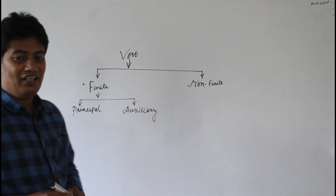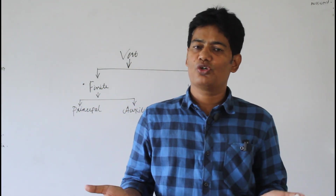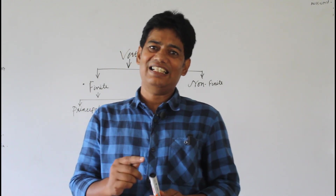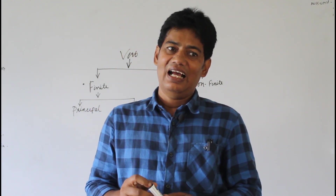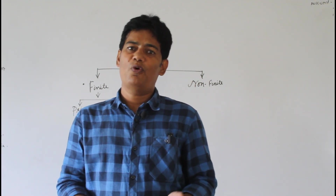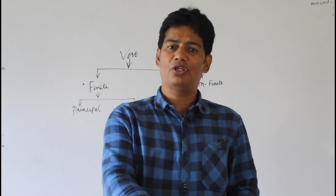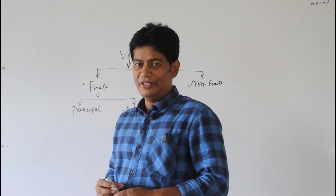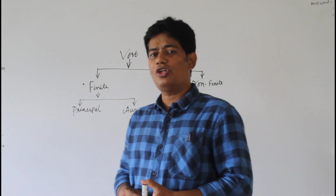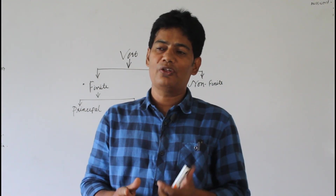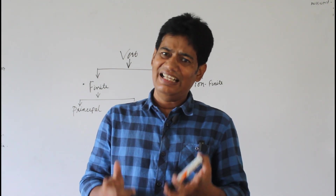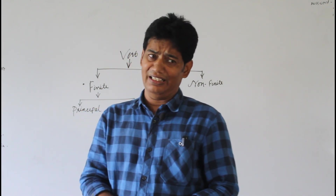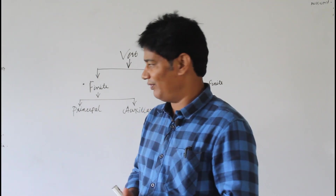What is principal verb? Principal verb is such a verb which carries its own meaning in a sentence, and which doesn't support or help any other verb. Rather, it takes help from auxiliary verbs. That is called principal verb. Auxiliary verb is such a verb which normally doesn't have any sort of meaning on its own. Rather, it helps the principal verb to express its meaning. That is called auxiliary verb.